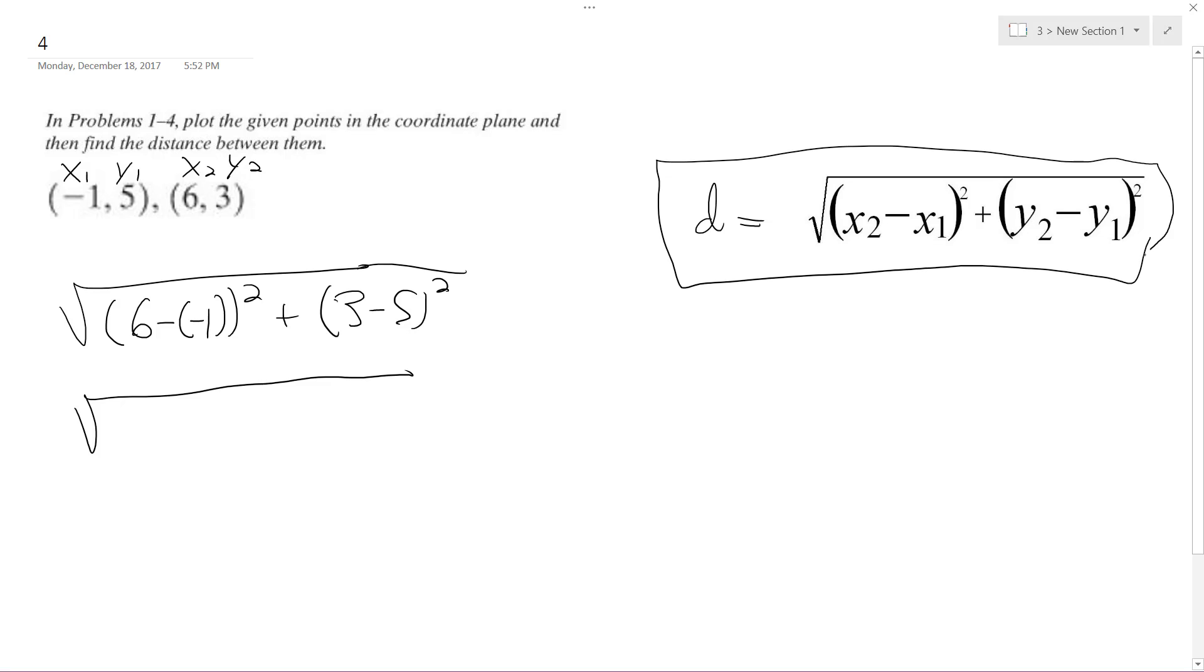So I'm using this and what I'm doing is I label my points here and then I plug them in accordingly. So 6 minus negative 1 is the same thing as plus 1, so it becomes 7 squared, plus 3 minus 5 which is negative 2 squared, so it becomes...